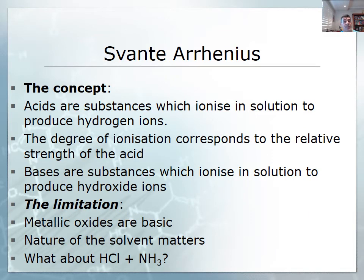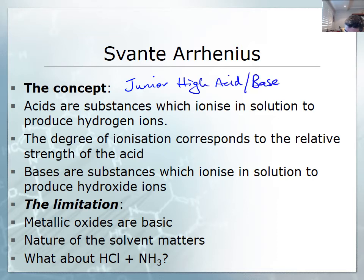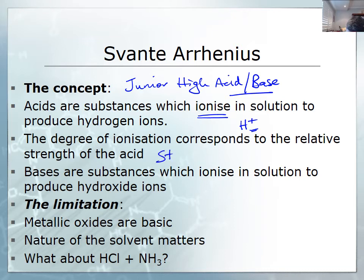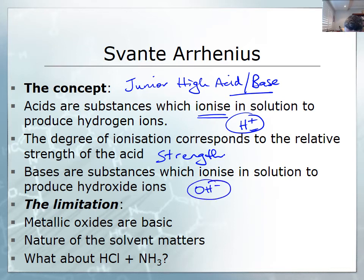That brings us to the ideas of Svante Arrhenius — basically what we might call junior high acids and bases. Up until the end of year 10, it's the Arrhenius definition that we use. Acids are substances which ionize in solution to produce hydrogen ions — a nice easy definition. The degree of ionization corresponds to the relative strength of the acids, so we now have a definition for acid strength. Bases produce hydroxide ions in solution. This is pretty much sufficient for most students.